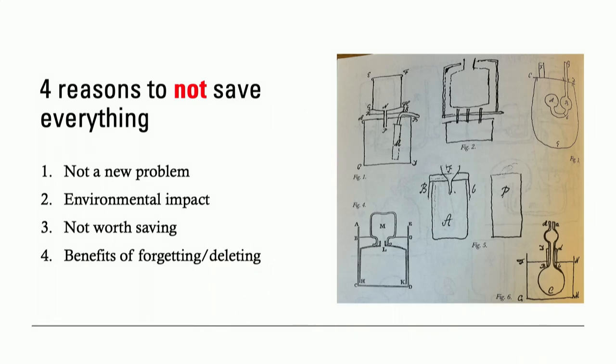So, in the face of all these challenges of digital records, some leading archival thinkers thought the best thing to do was to save everything possible and wait and see what solutions might arise — that it wasn't possible or viable anymore to appraise materials, to decide what to keep and what not to keep. Just save everything and get rid of archivists. But there's something about this that doesn't sit right with me. I'll outline four key reasons why: it's not a new problem, the environmental impact, some things are just not worth saving, and there are benefits in forgetting.